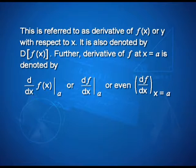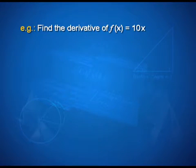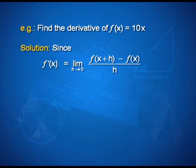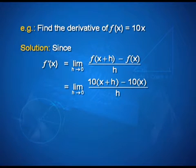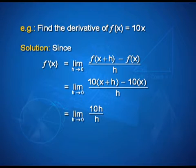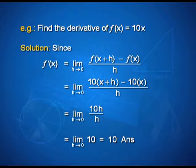Now let us solve some examples. Find the derivative of f(x) = 10x. Since f'(x) = limit of f(x+h) minus f(x) divided by h as h tends to 0, that equals limit of 10(x+h) minus 10x upon h as h tends to 0, which simplifies to limit of 10h upon h as h tends to 0, that is limit of 10 as h tends to 0, which equals 10.